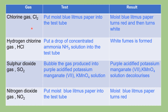Chlorine gas turning the blue litmus paper red shows it is an acidic gas, but the bleaching to white shows that chlorine gas has bleaching properties. You know Clorox bleach — Clorox contains hypochlorous acid, so chlorine gas has bleaching properties.